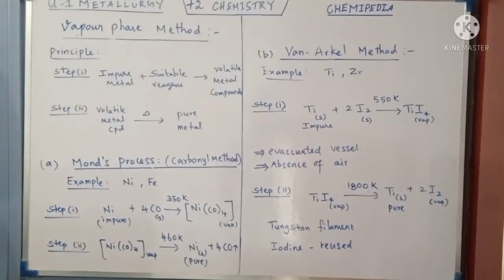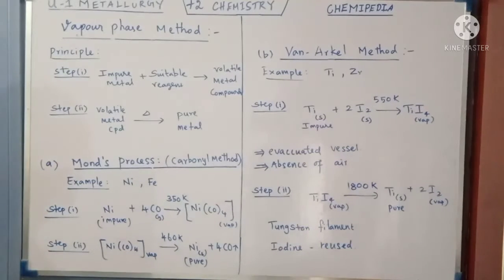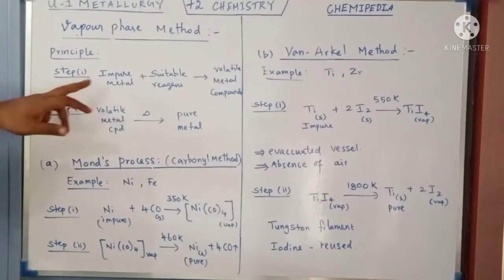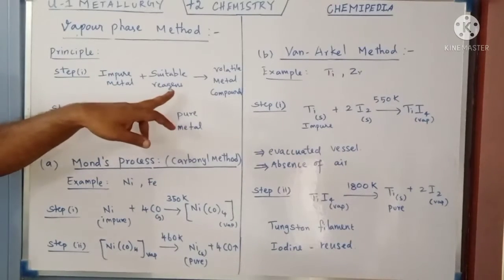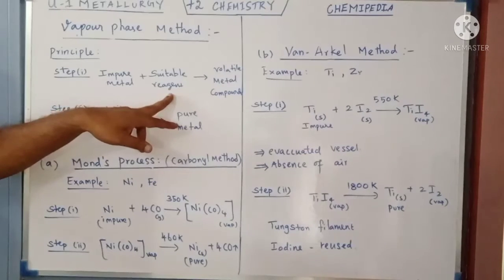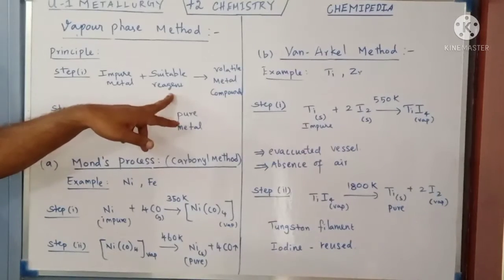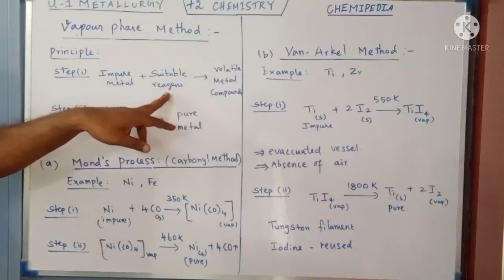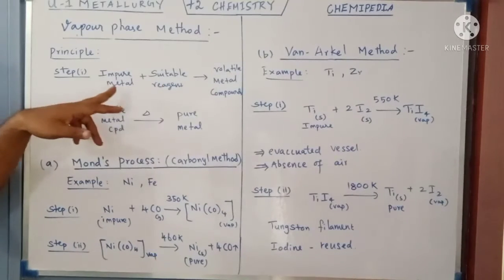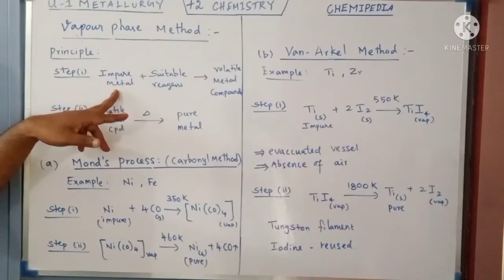First let me discuss about the principle behind the vapor phase method. In the vapor phase method, the impure metal that we are going to refine is first made to react with a suitable chemical reagent. The condition here is that the chemical reagent must react with only the metal, not with the impurity.